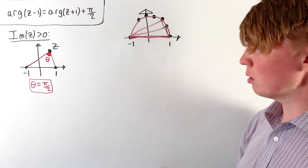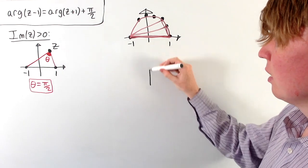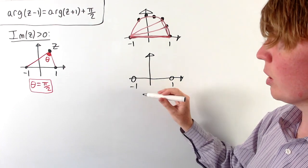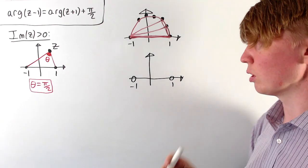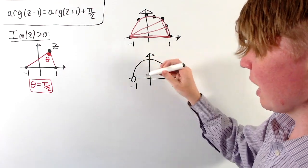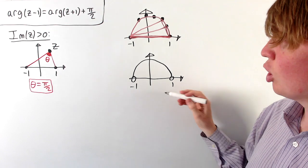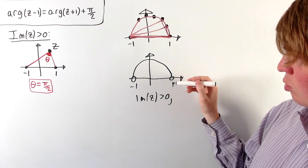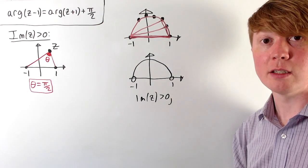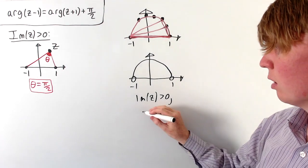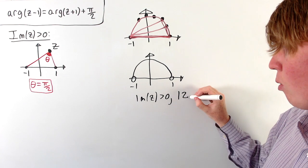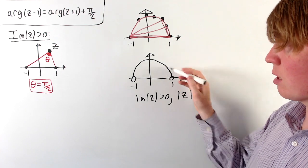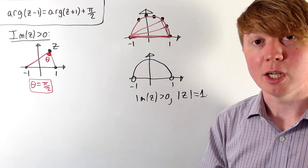We can characterise our solution set where the imaginary part of z is greater than zero. We can't include positive and negative 1 because the imaginary part equals zero there. We have this semicircle in the upper half plane, and it's actually a unit circle — the diameter is 2, so the radius is 1, centred at the origin. So the solution set here is: imaginary part of z greater than zero, and the modulus of z equal to 1.